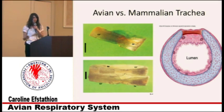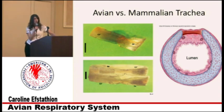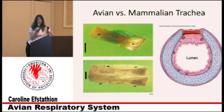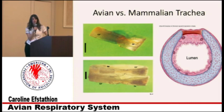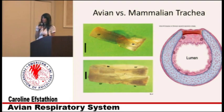Because the trachea is longer and wider, birds have about 4.5 times more volume of air in their trachea. We consider this dead space because no gas exchange occurs there — and it's a large volume to overcome. To compensate, birds breathe both deeper and slower to account for the amount of dead air in their trachea.